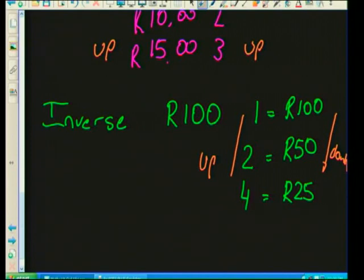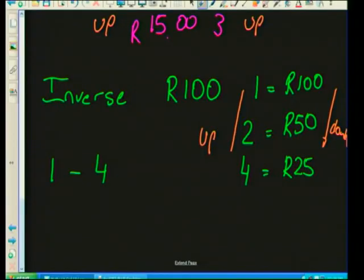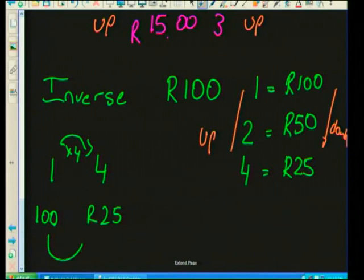From one to four children, I multiplied by four — and from 100 rand to 25 rand, I divided by four. So I'm doing the reverse, and that is where the 'inverse' comes from. It occurs in the same proportion — the factor of four hasn't changed. That is inverse proportion.